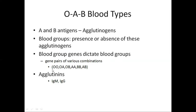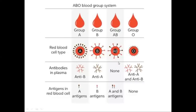Anti-B antibodies must be absent in the plasma of a blood group B patient. The blood group genes that dictate the blood groups are OO, OA, OB, AA, BB, and AB. Antibodies, also called agglutinins, include IgM, IgG, IgD, IgE, and IgA. This figure shows us the various types of blood groups: group A, group B, group AB, and group O.